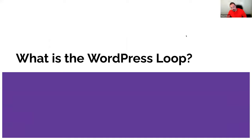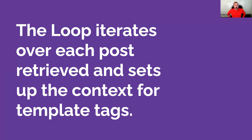So what is the WordPress loop? The WordPress loop is basically something that you'll use in your code, typically in a WordPress theme, but you might use it in a plugin as well. It is something where you'll iterate over each post and then set up context for template tags. Template tags are typically used in WordPress themes.